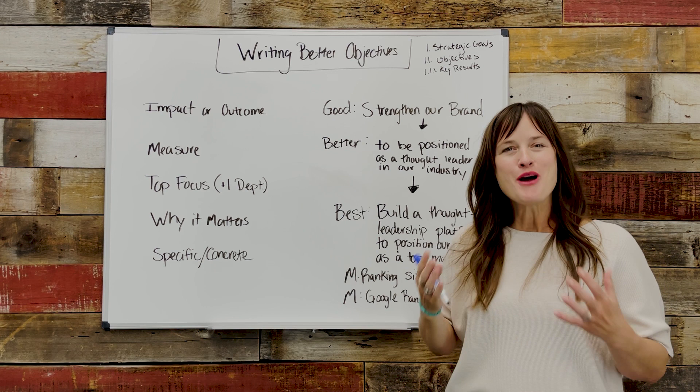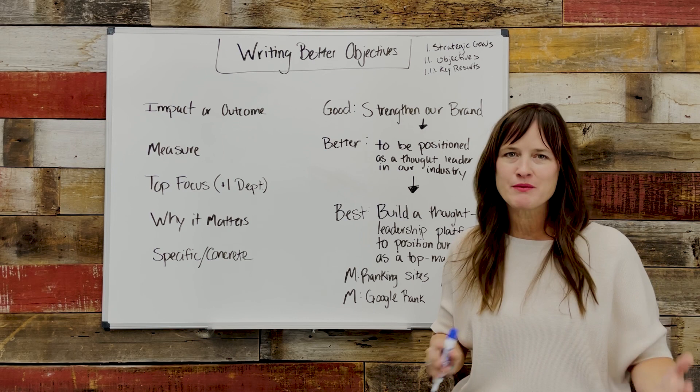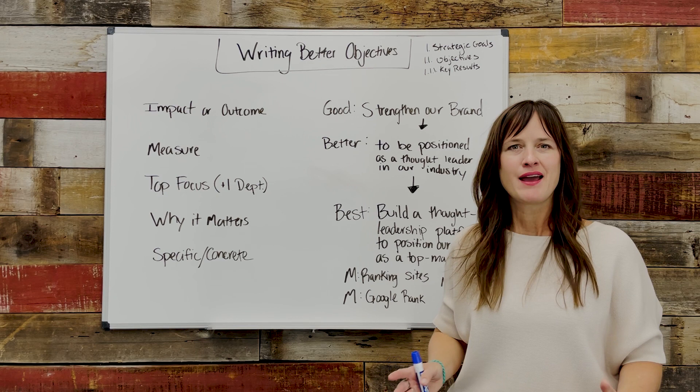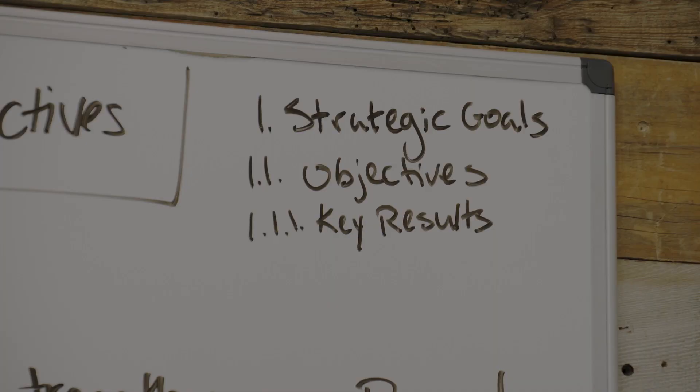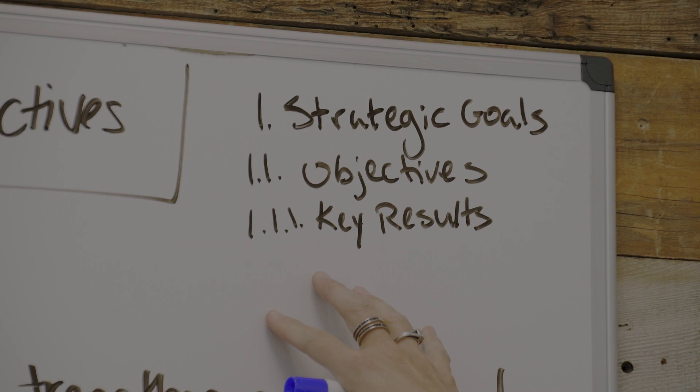You know when you don't have great objectives because you look back at them a month or two months or three months after you wrote them and you can't remember what it's all about and why it was important. So let's not do that to ourselves as you're thinking about writing objectives and key results this cycle. Let's write great objectives and let's walk through how to do that.